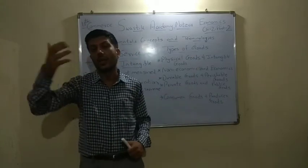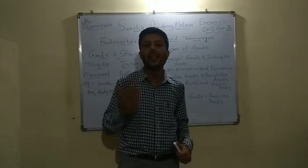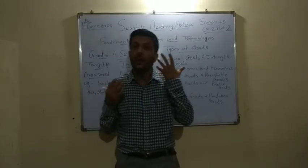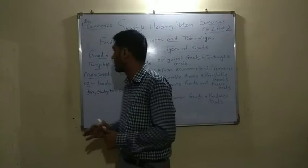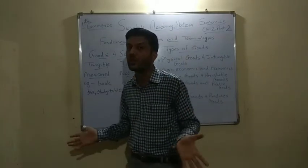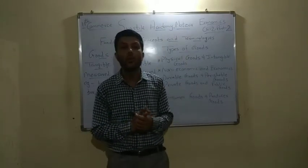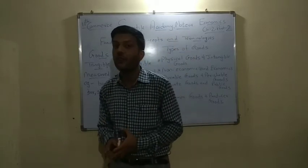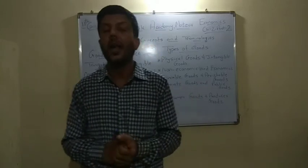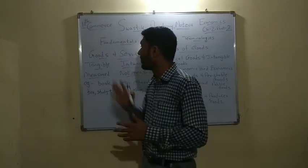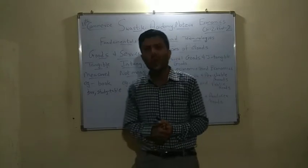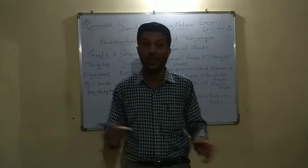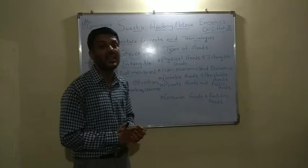Measured means cardinally measure kiya ja sakti ho — jaise aapke paas pencils hain toh 1, 2, 3, 4, 5, 6, 7 — aise aap measure kar sakti ho. KG mein hai, liters mein — jo bhi SI unit hai, usse saap se aap physical goods ko measure kar sakti ho. Intangible cannot be measured — koi bhi banking ki service ho, kisi bhi chiz ki service ho, woh measure nahi kiya ja sakti. Sirf usko dekha ja sakti ho aur mehsous kiya ja sakti ho. Example: book, box, study table. Example: education, banking, insurance.